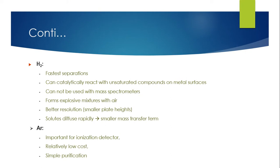Hydrogen allows the fastest separations but can catalytically react with unsaturated compounds on metal surfaces. It cannot be used with mass spectrometers and forms explosive mixtures with air. However, it provides better resolution and smaller plate heights, and solutes diffuse rapidly through it, giving a smaller mass transfer term.